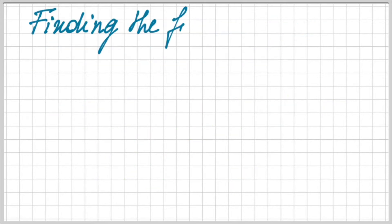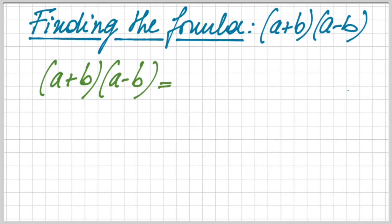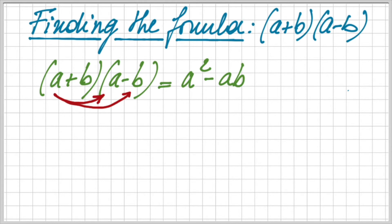Let's see how we can find this formula. We start with the formula the way we did before. So we have a plus b multiplied with a minus b. And again, we are going to apply the distributive rule. So we first have a times a, which gives me a squared. Then we have a times minus b, which is minus ab. Then we have b times a, which is ba. And the last one is b times b, which is b squared. But we have plus b times minus b, so we have minus b squared.